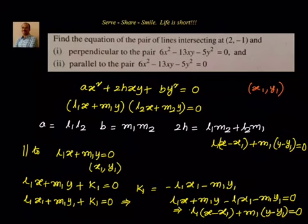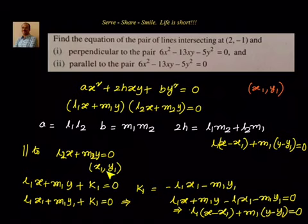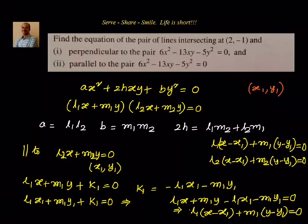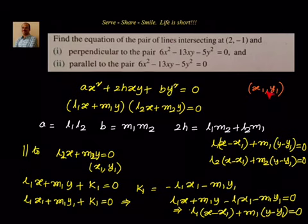Similarly, for the second line parallel to l2x + m2y = 0 and passing through (x1, y1), wherever l1 appears it becomes l2 and m1 becomes m2. So the second equation is l2(x − x1) + m2(y − y1) = 0. If we multiply these two lines together, that gives us a pair of straight lines parallel to the given lines and passing through (x1, y1).